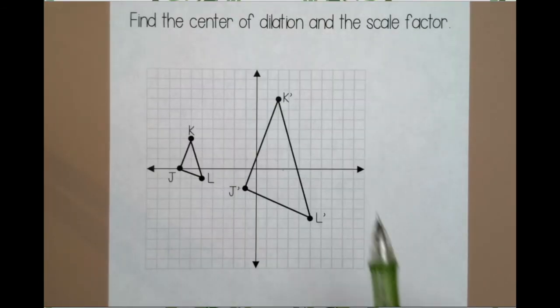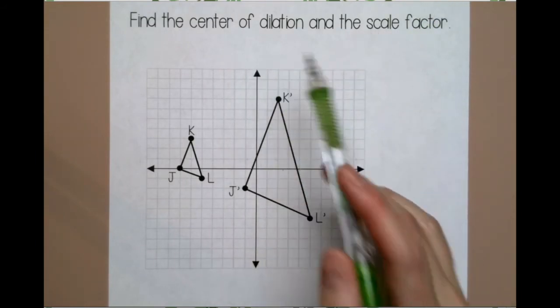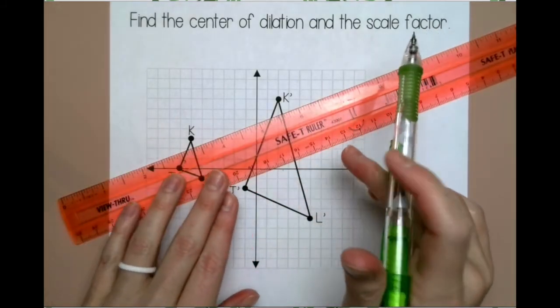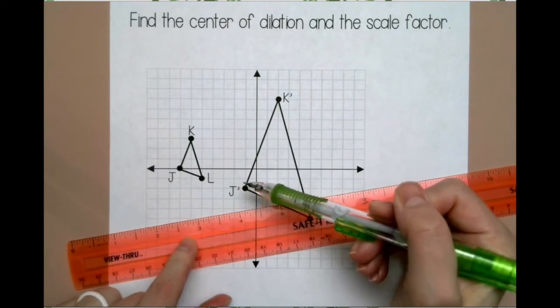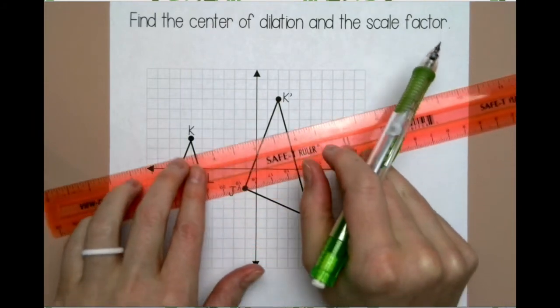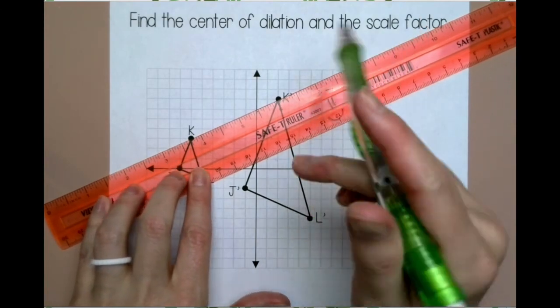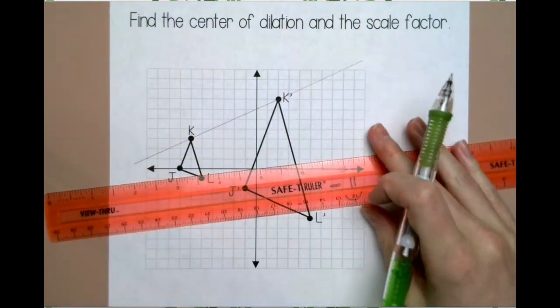In this example, I want to find the center of dilation and the scale factor. So to find the center of dilation, you can take a ruler, and you can draw lines that connect corresponding points, so K and K prime, J and J prime, L and L prime. So I'm going to start with K. You want to make sure your line is really straight, and you want to go all the way across your graph, your coordinate plane.